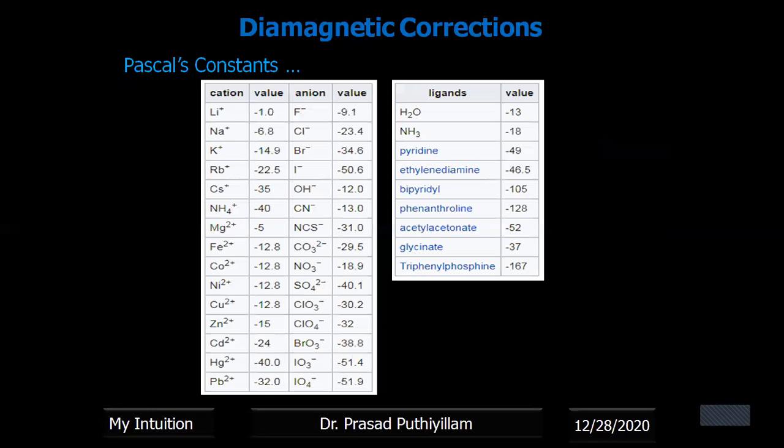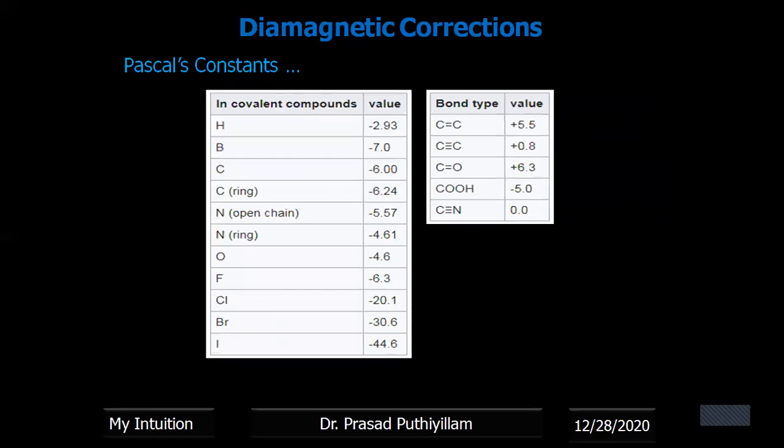It also depends upon the number of electrons present in the group of atoms and also the conjugation effect or delocalization effect, or pi-d delocalization, also affects the diamagnetic correction. So some of the values for monoatomic cations or diatomic, monovalent cations and divalent cations, as well as anions and for some ligands, are listed here. And in covalent bonds as well as with the different bond types of double bond, triple bond, say double bond with oxygen, triple bond with nitrogen, all those variations, those values are also listed over here.